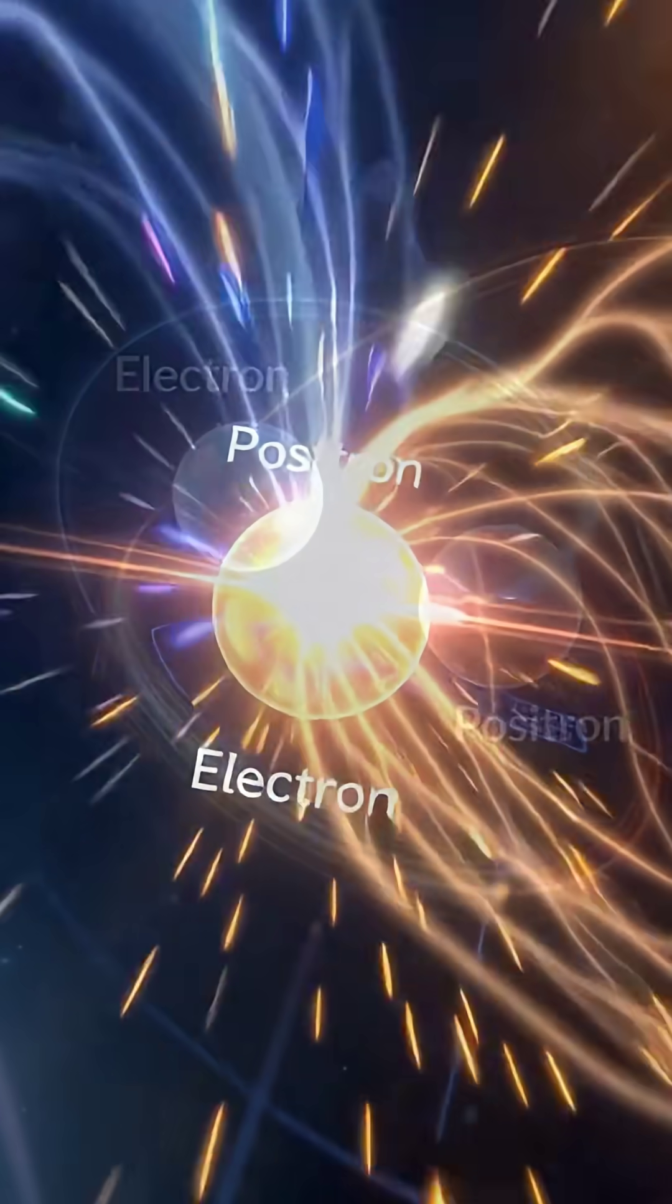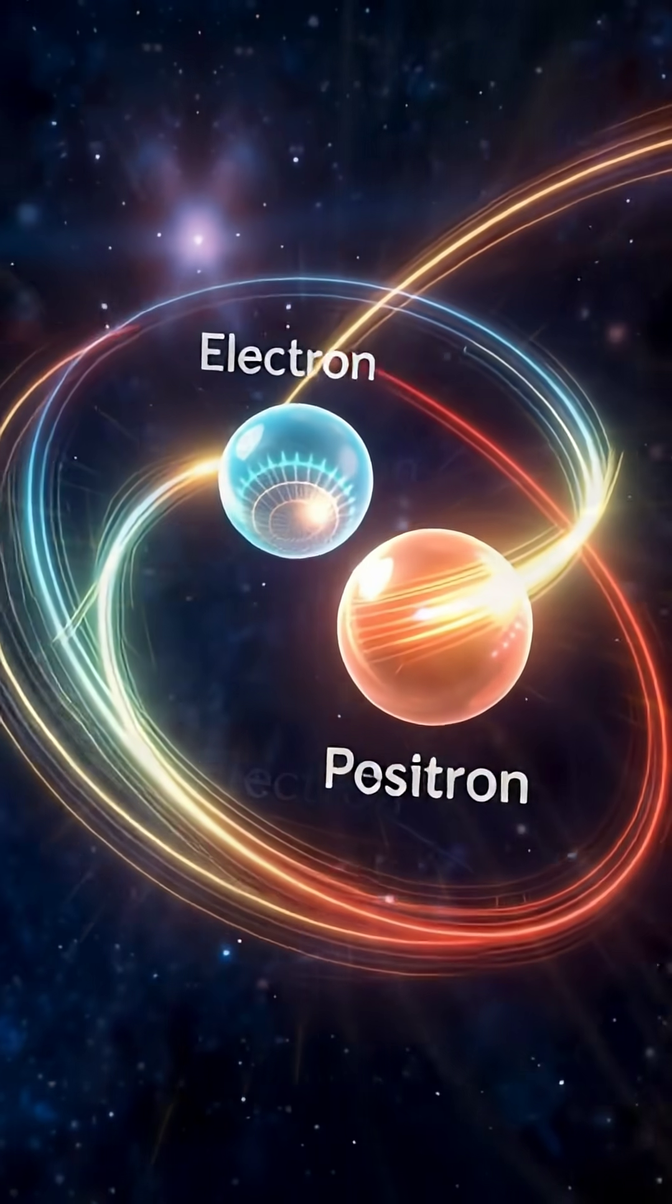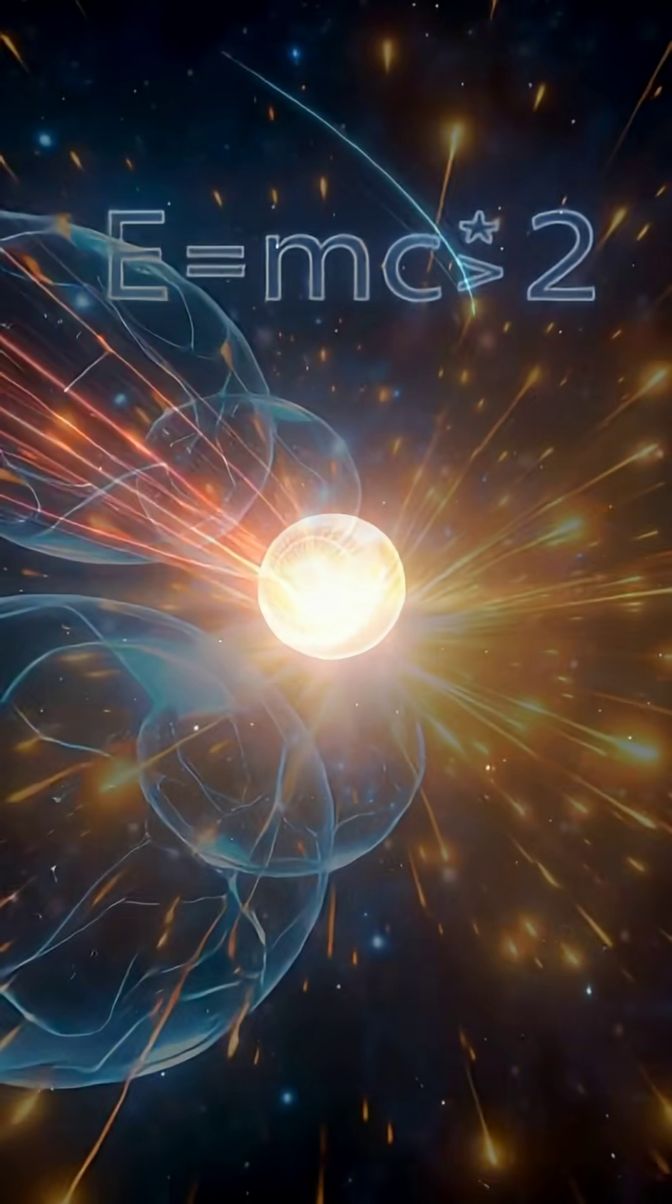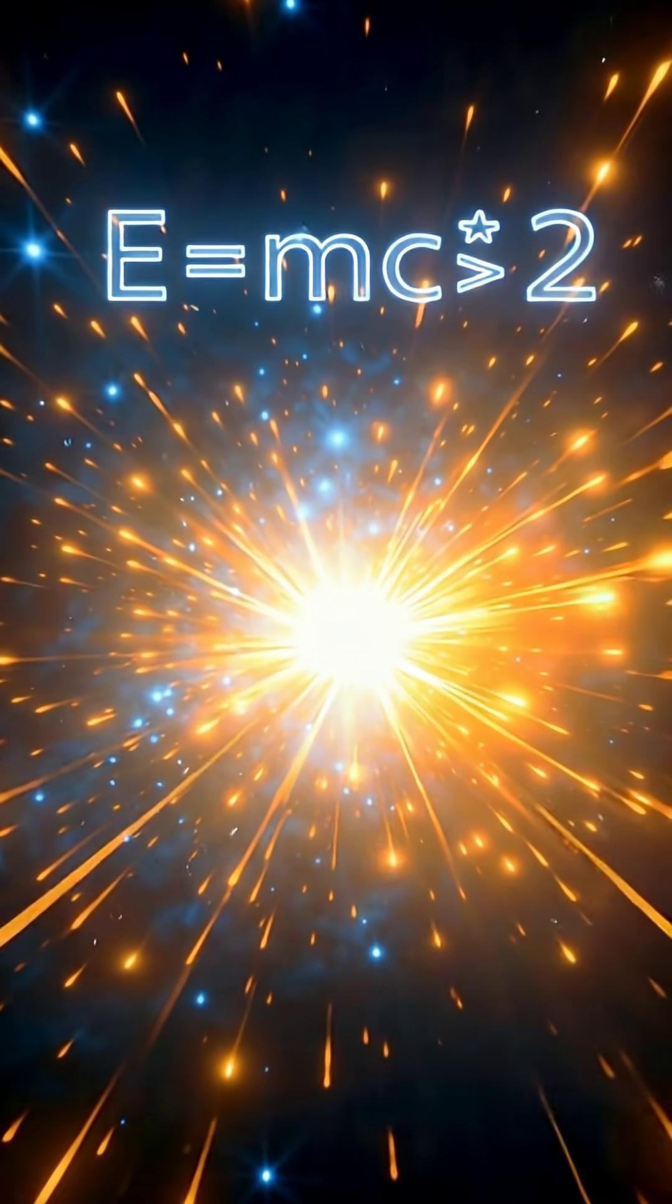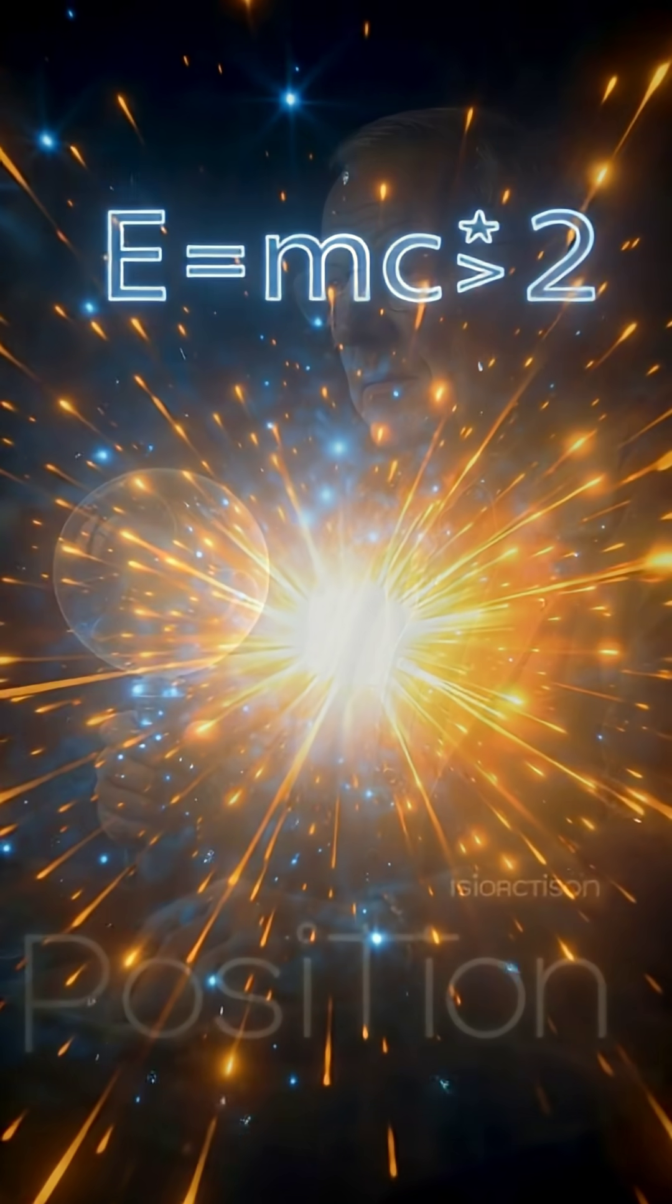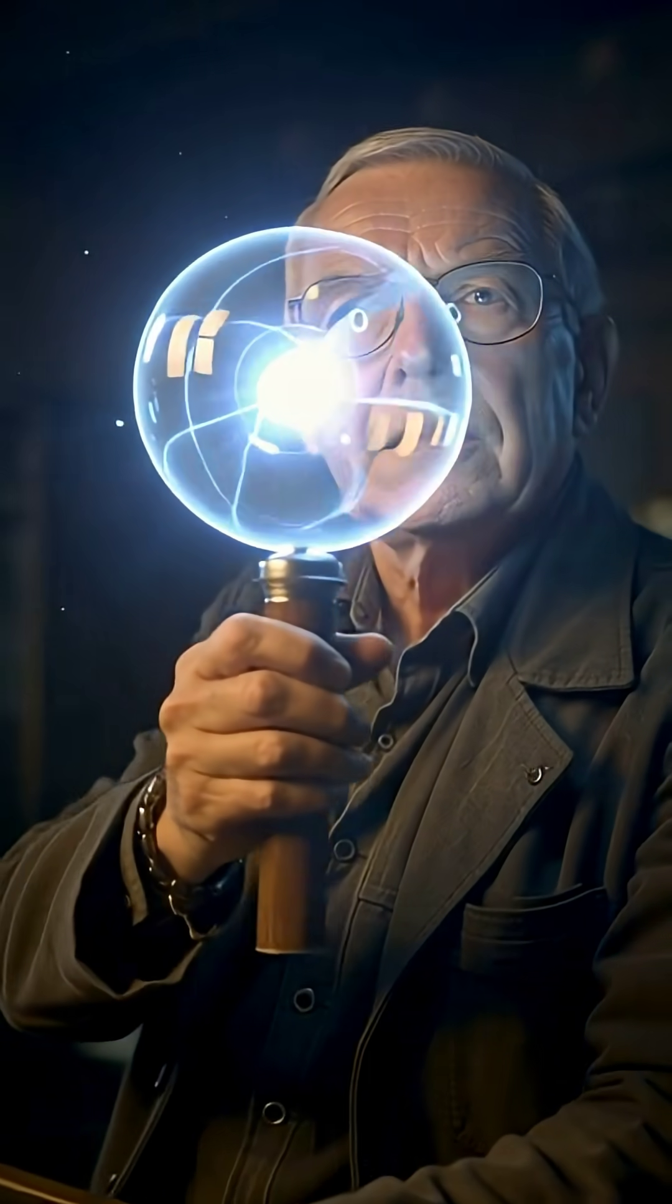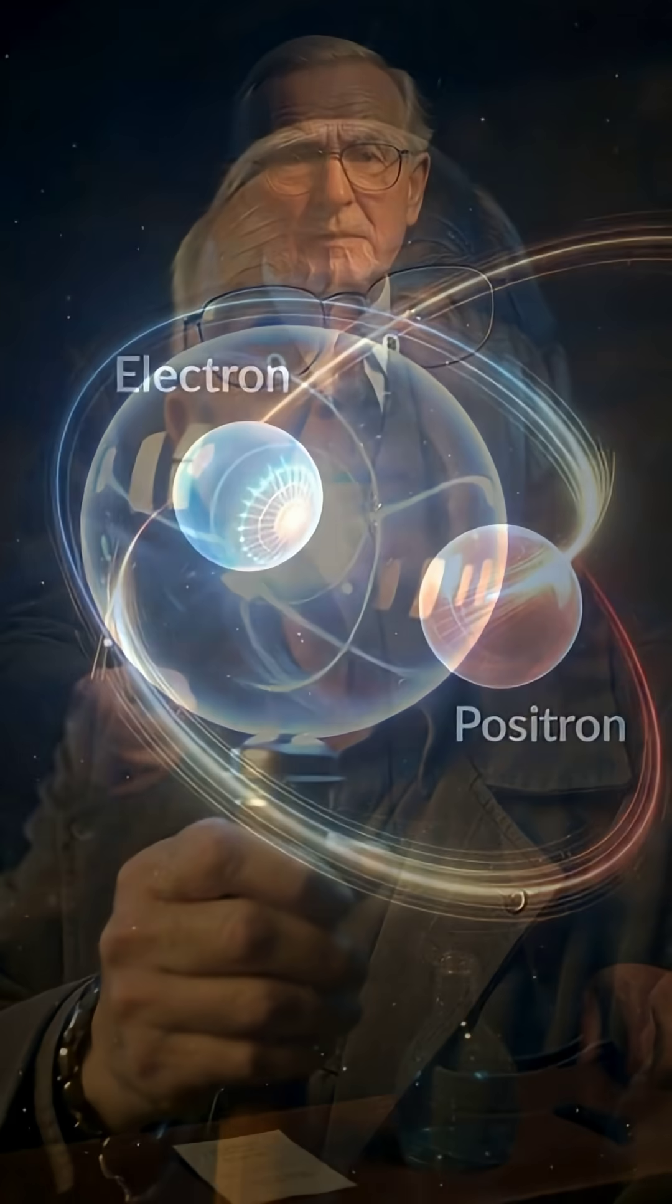When matter and antimatter meet, they annihilate instantly, releasing enormous energy according to Einstein's E equals MC squared. Today, antimatter is already used in medicine through PET scans, helping doctors see inside the human body.